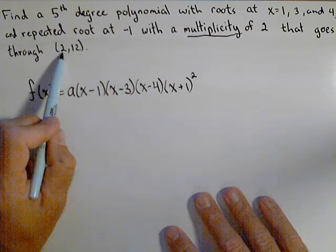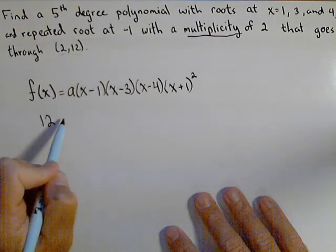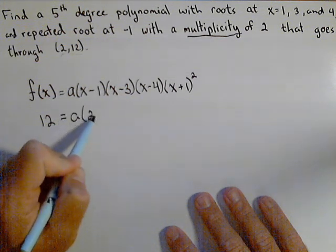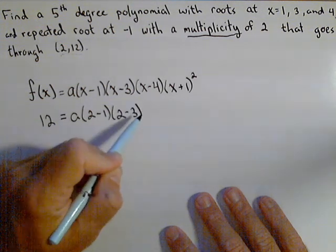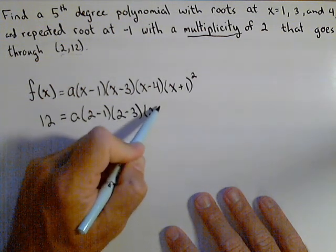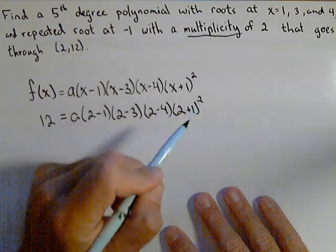And what we're going to do is plug in, we know that when x is two, the output has to be 12. So 12 is equal to a times (2 - 1) times (2 - 3) times (2 - 4) times (2 + 1) squared.